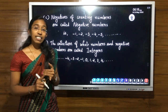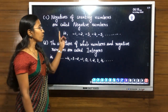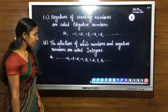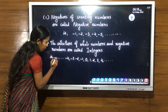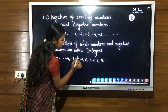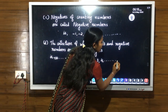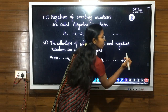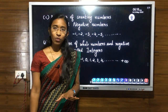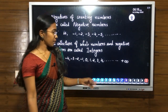In this class our topic is integers. Integers means that is the collection of whole numbers and negative numbers. So all whole numbers and negative numbers are called integers, which means it starts from minus infinity — minus 4, minus 3, minus 2, minus 1, 0, 1, 2, 3, 4 — and it goes on to plus infinity.